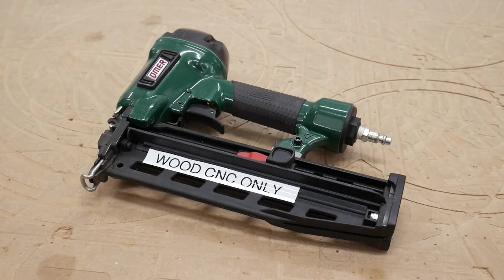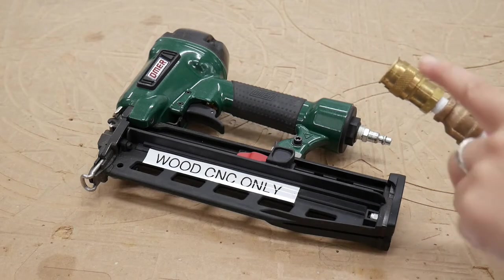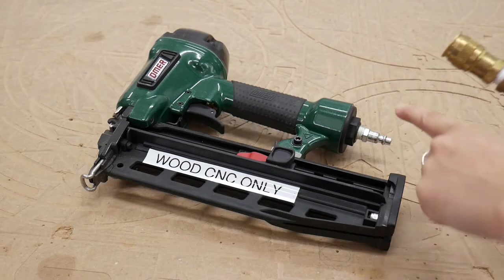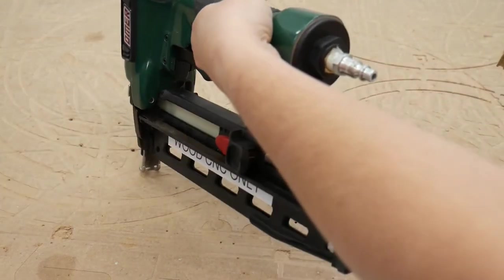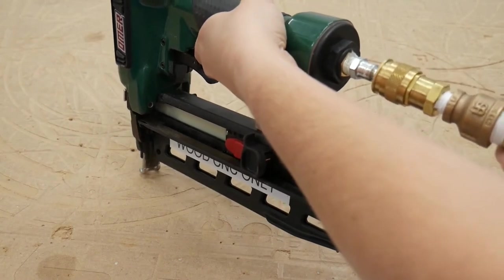The brad nailer is pneumatic, so it will need to be hooked up to the shop air to operate. To connect, simply press the male and female fittings together. They'll automatically lock in place.